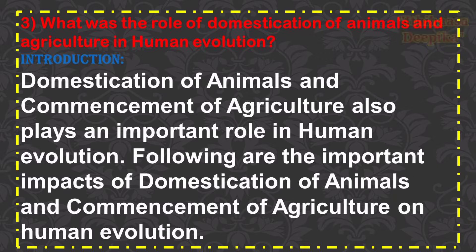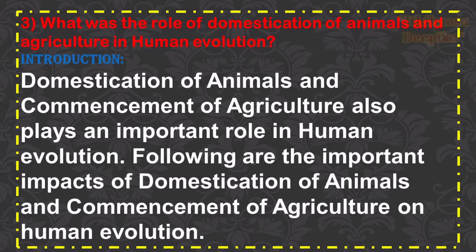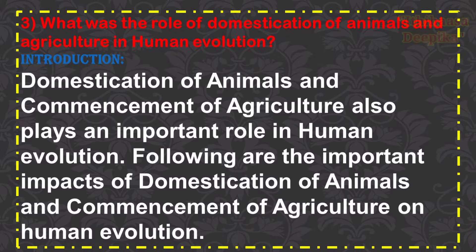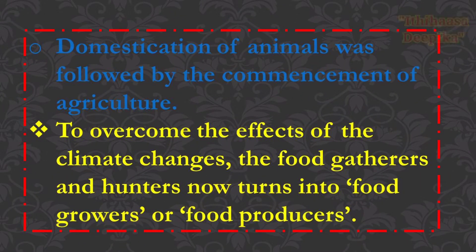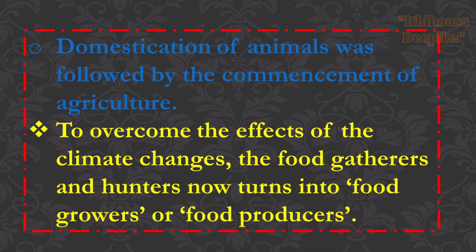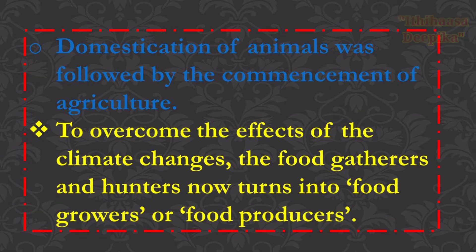Question number 3: What was the role of domestication of animals and agriculture in human evolution? Domestication of animals and commencement of agriculture also play an important role in human evolution. Domestication of animals was followed by the commencement of agriculture. To overcome the effects of climate changes, food gatherers and hunters turned into food growers or food producers.